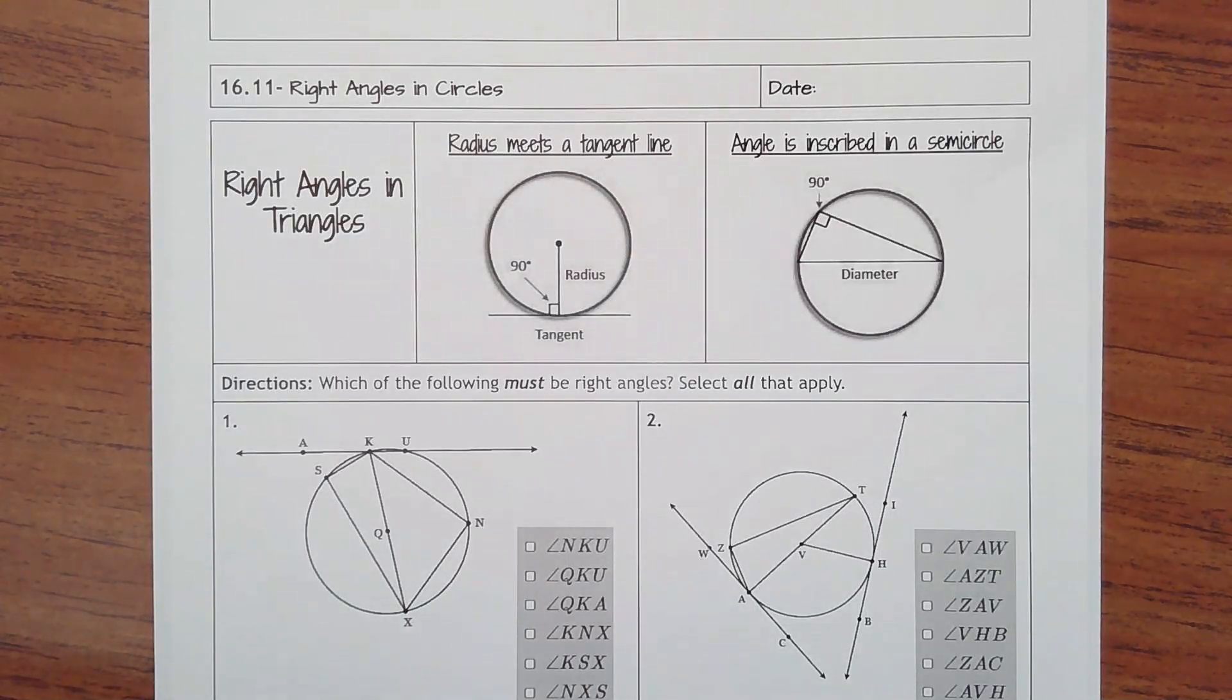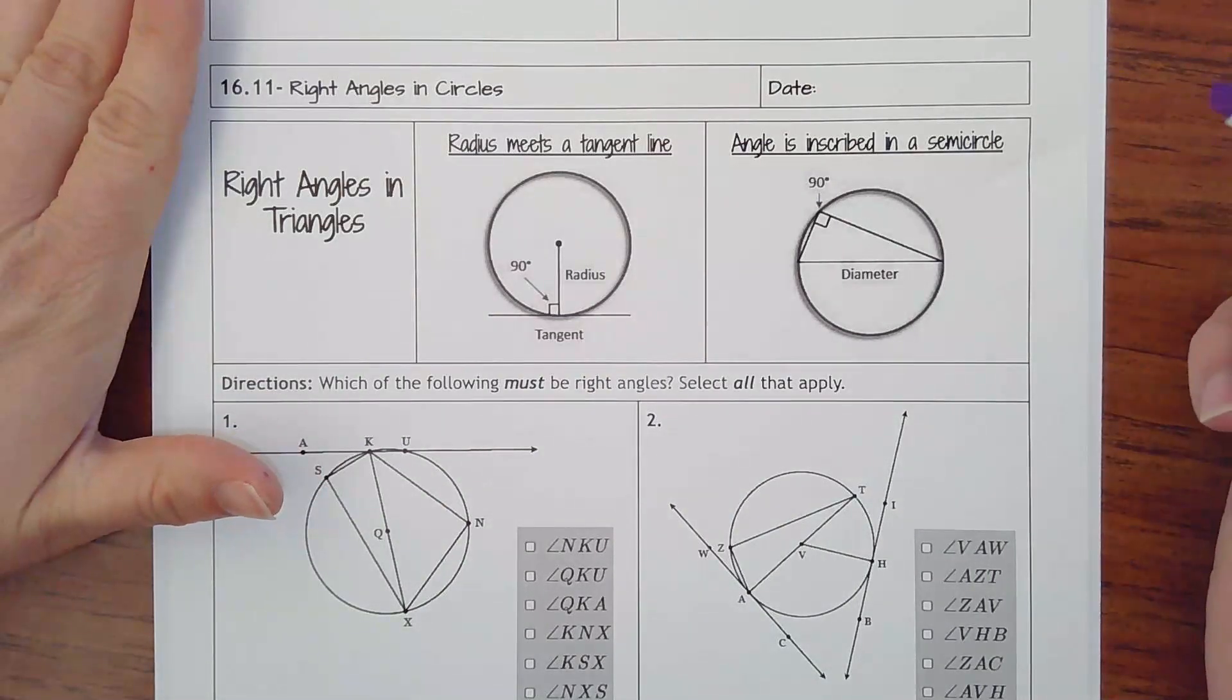Lesson 16.11 is right angles in circles. So there's two different cases that we need to know about when we have these certain things in a circle, we're actually creating right angles in some triangles that are being made.